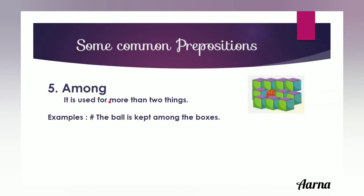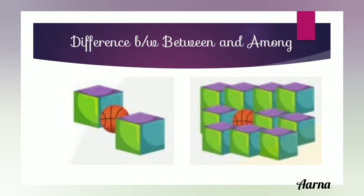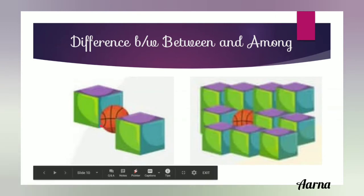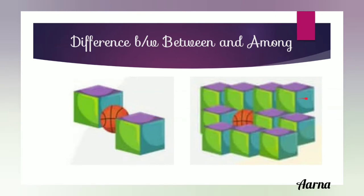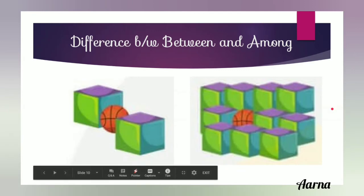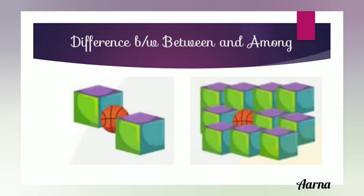The fifth preposition is 'among'. It is very similar to 'between', but more than two things are involved. For example, 'the ball is among many boxes' — there are more than two things, so we use 'among'. As shown: when there are two boxes, we use 'between'; when there are more than two boxes, we use 'among'.